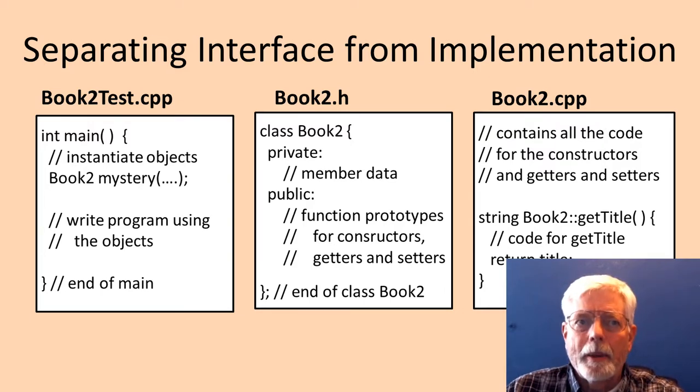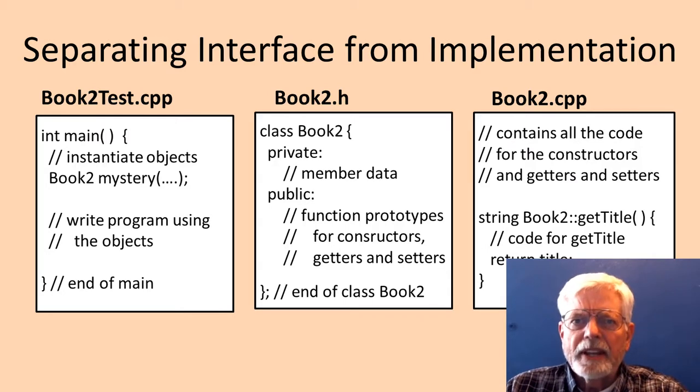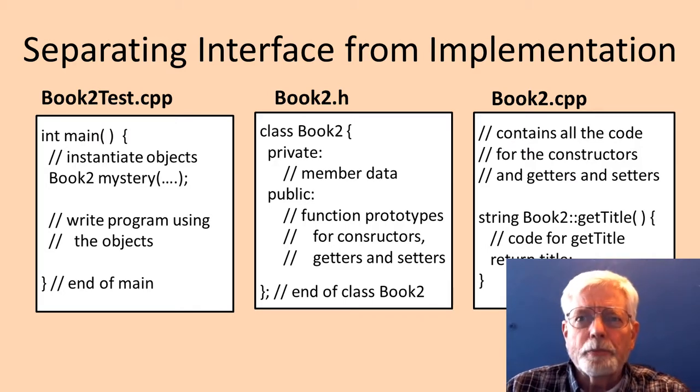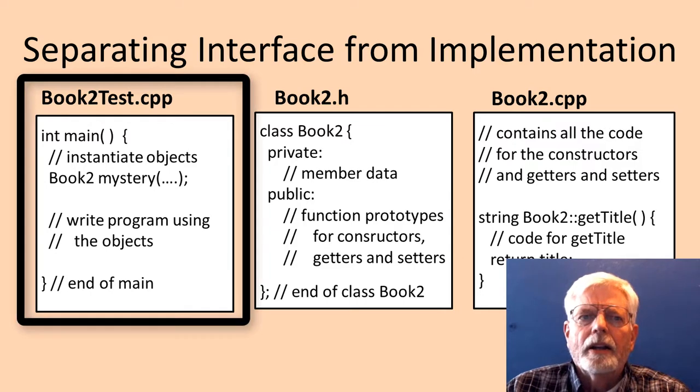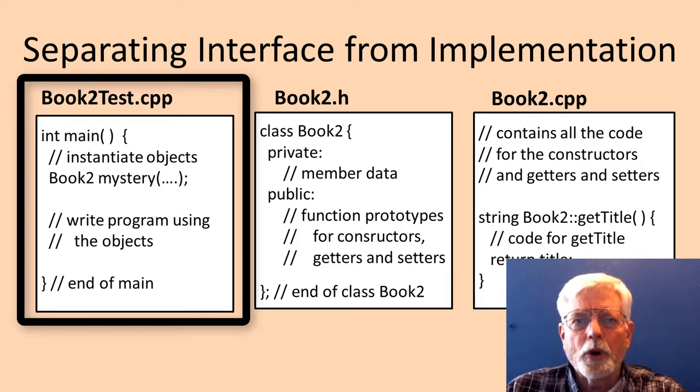I realize that this seems like a lot of extra work for a small program that has been created so far, but this way of doing things is really important as projects get larger. The main program includes Book2.h and does not need to know how the executable code for the Book object works when it declares a Book object.